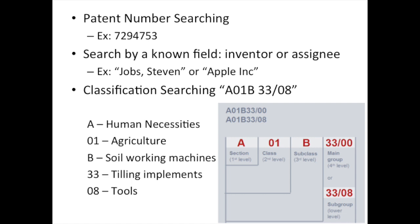You can take these parts of a patent and use them for different types of searching. If you know the patent number, it's very easy to find the patent — sometimes products will have the patent number printed on them, or it could be listed on the company website. Often Wikipedia will have a guess at the patent number of a product. But to be most thorough so you don't miss any patents, it's best to use classification searching. The patent office groups all inventions in one technology area into classifications. Here's an example of the CPC system: A is Human Necessities, A01 is Agriculture, B is Soil Working Machines, 33 is Tilling Implements, and 8 is Tools. Each level has fewer patents to search — while Section A has millions of patents, Subgroup A01B33/8 has only a few thousand.